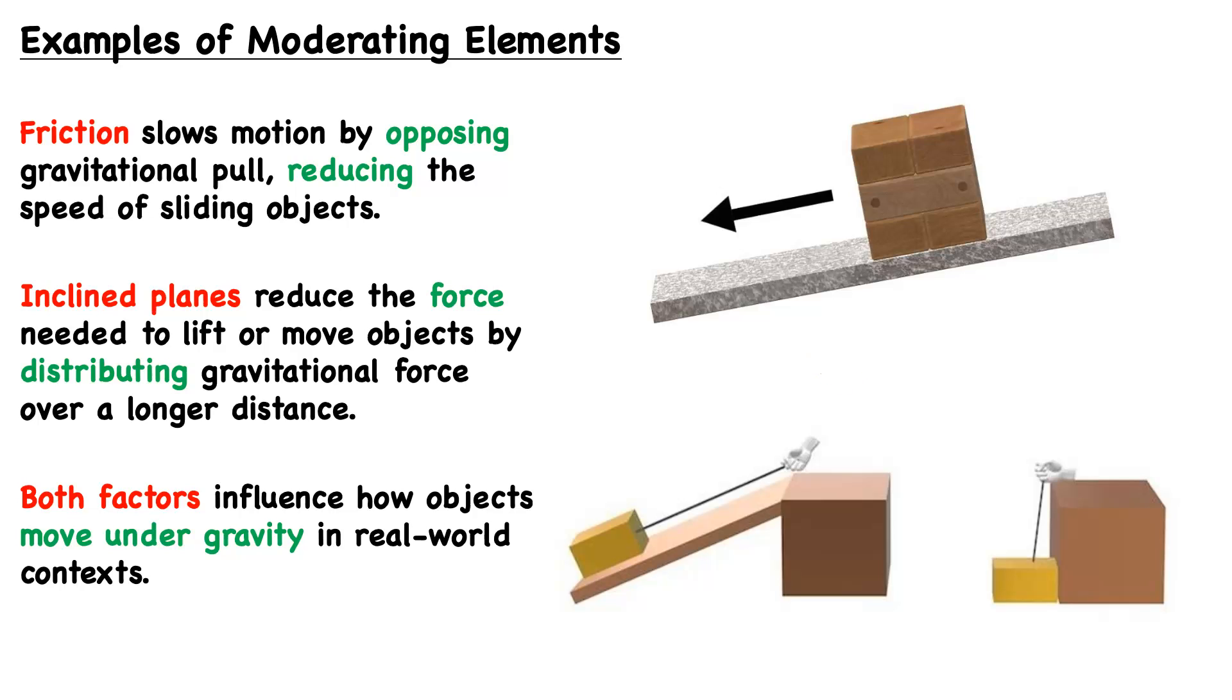In the left portion of this image, we have somebody pulling a string, and the other end of that string is attached to an object, and it's being pulled up this ramp. So it's not sliding down, but instead it's being pulled up.